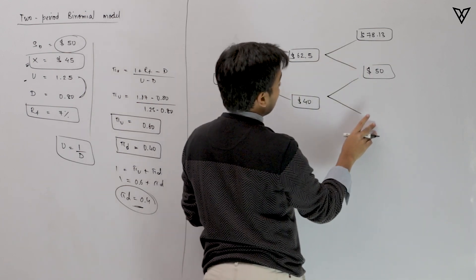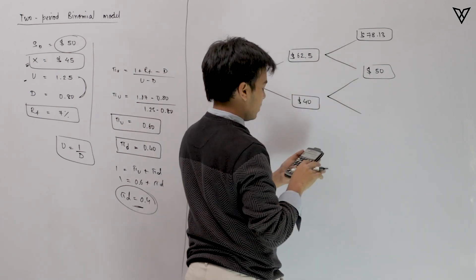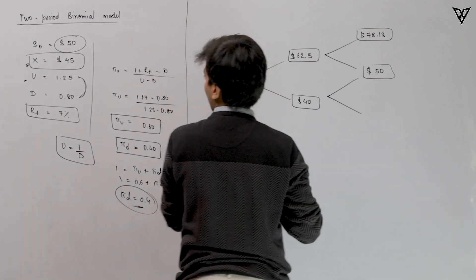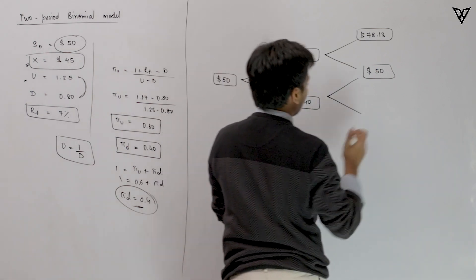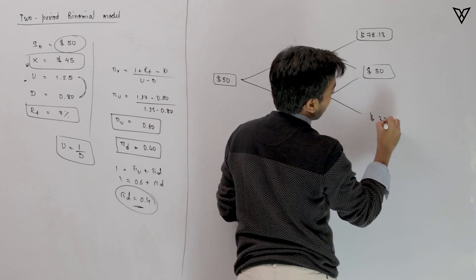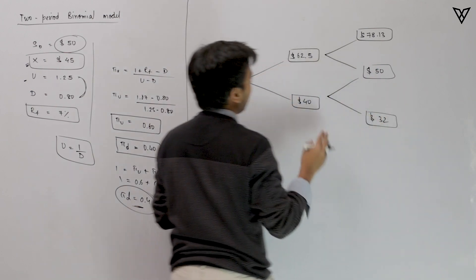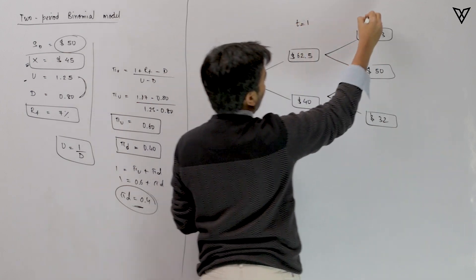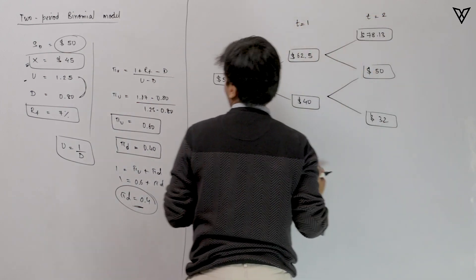Finally, from $40, multiplying by the down factor of 0.8 gives $32. So the full set of values at time period 2 are $78.13, $50, and $32, completing the two-period binomial tree.